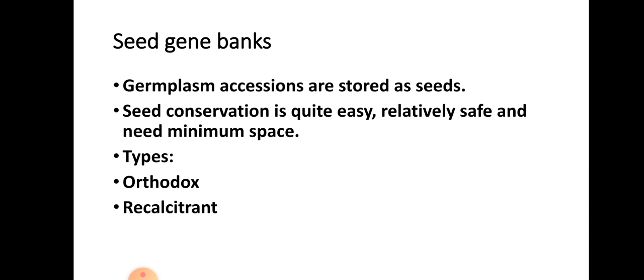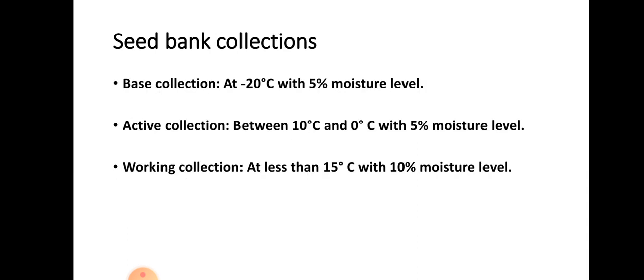Recalcitrant seeds are desiccation sensitive — their viability drops if their moisture content is reduced below 12 to 30%. Examples include seeds of many forest and fruit trees like citrus, cocoa, coffee, and rubber. These are difficult to store as compared to orthodox seeds.